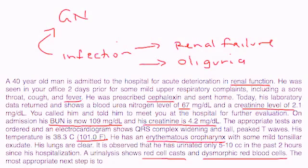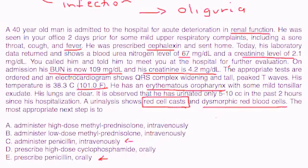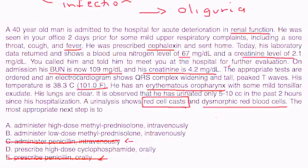There's no doubt he has glomerulonephritis caused by an infection, presenting with renal failure, fever, and specific test results. Choices involving antibiotics are no longer appropriate — he's way beyond an upper respiratory infection and is now in renal failure. You're left with cyclophosphamide and prednisone. Cyclophosphamide is reserved for more dramatic immune suppression in patients with more severe disease and is not the best choice initially. The most appropriate next step is high-dose steroids, because in adults, early initiation of high-dose steroids is associated with the best outcome.